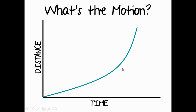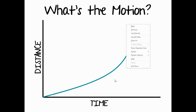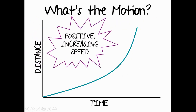This type of line is moving up the y-axis, so it is positive motion. However, because it is not a straight line — because it curves — this is considered increasing speed. Because it is becoming more steep, curving up, a curved line means the object is changing speed. When you have a steeper curve, that object is moving faster, so this object is increasing in speed.